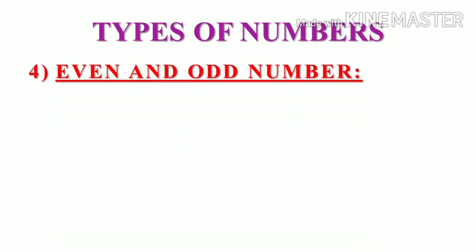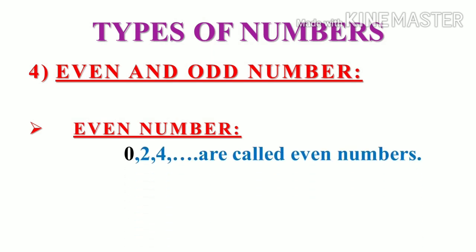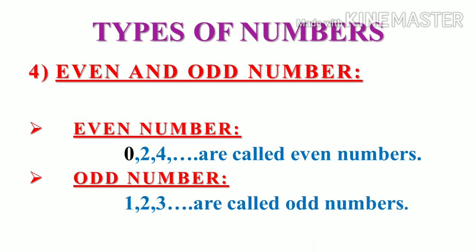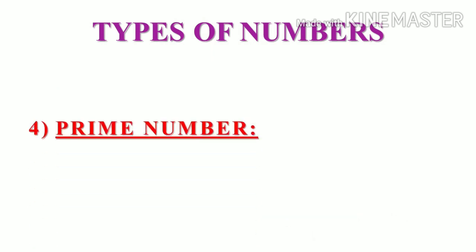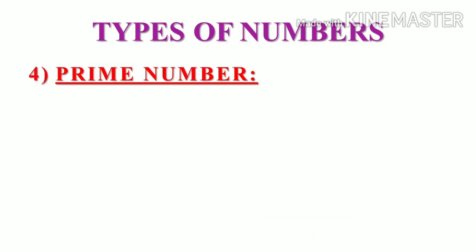Next, we are going to see even and odd numbers. Even numbers are the numbers which are divisible by two. Zero, two, four are called as even numbers. Here, zero is included, we have to note that. Odd numbers are the ones which are not divisible by two, and we call one, three, five as odd numbers.